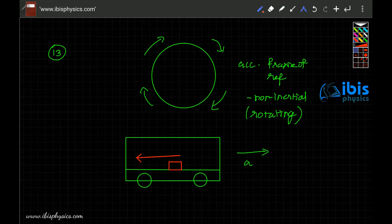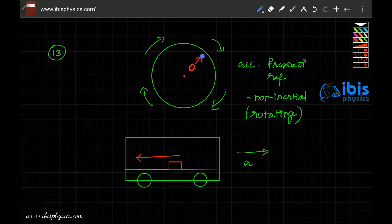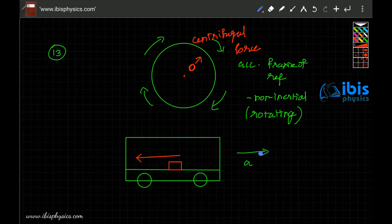The box tends to slide backward when the bus accelerates. Similarly, if you have a coin on the rotating platform, when it rotates the coin slides away from the center because it experiences a force directed away from the center.